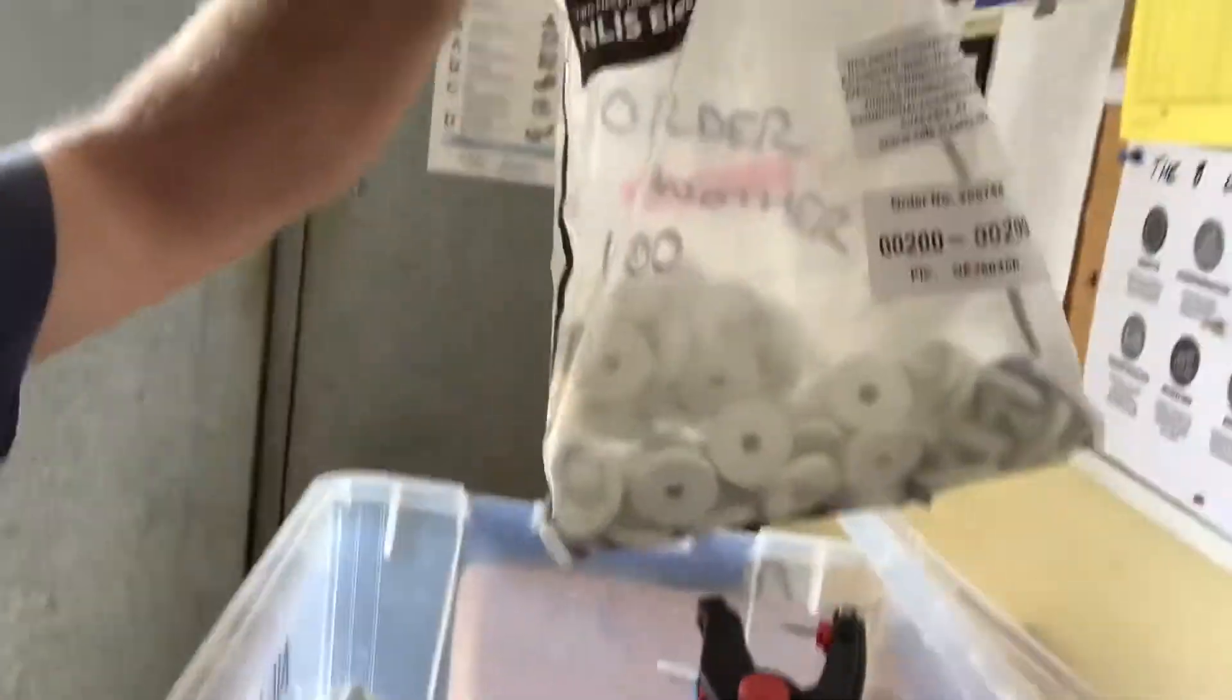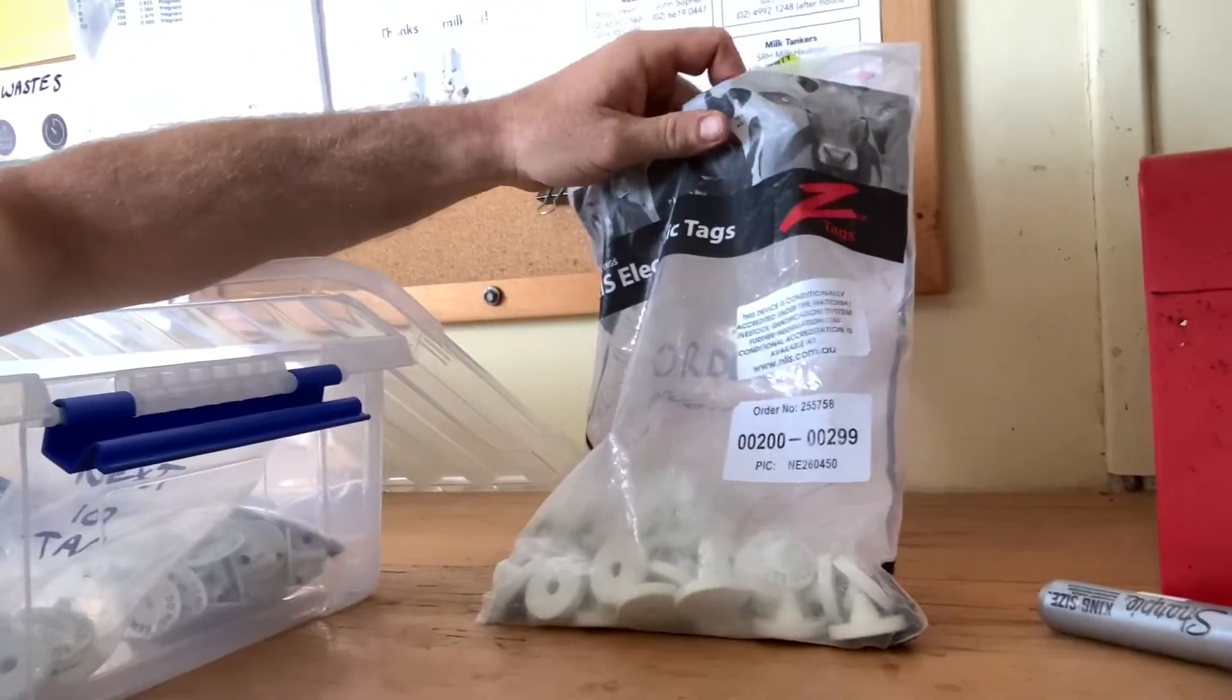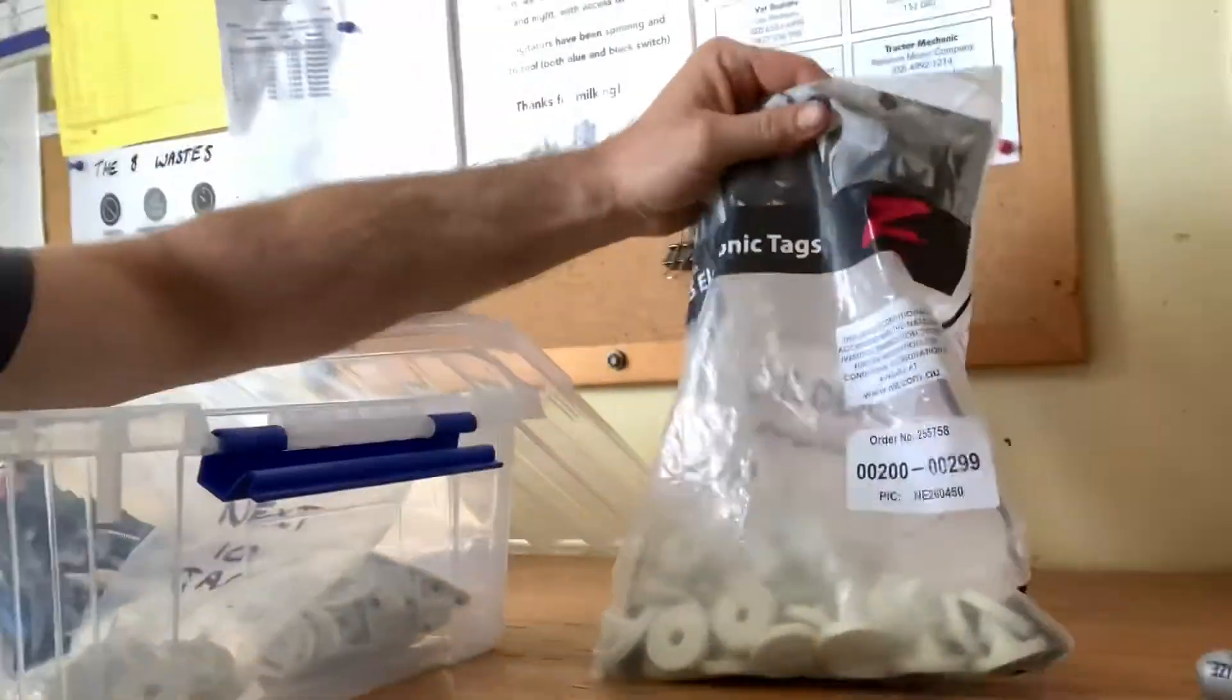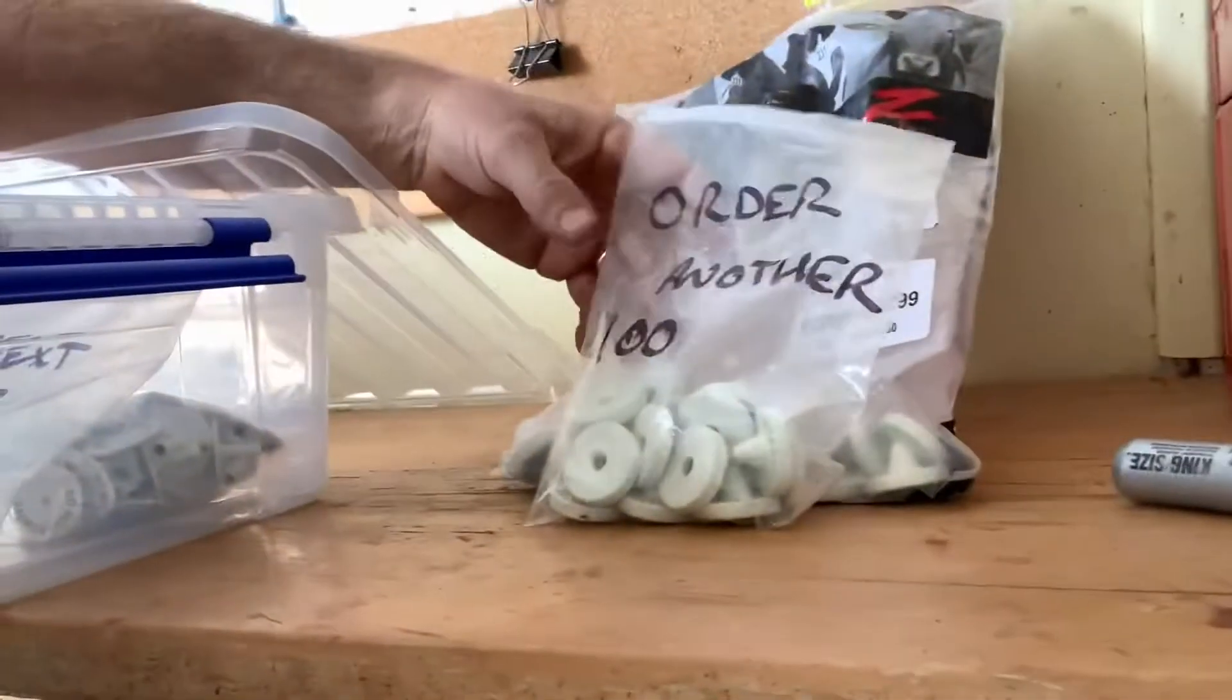the big bag that they come in. So this big bag—these are our numbers that we've specified we need, and they come in this big bag just all loose. What we do is we pick out the last 10 to 15 numbers and we put them in a separate